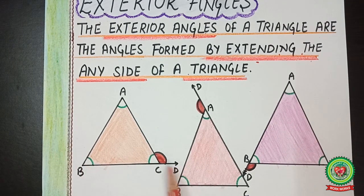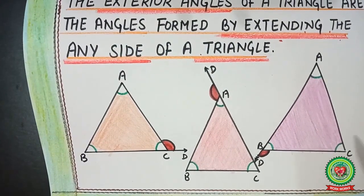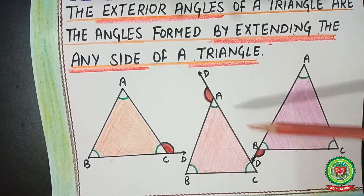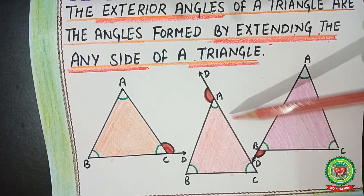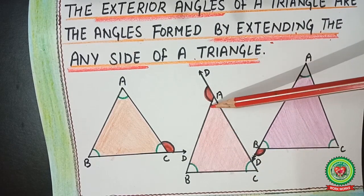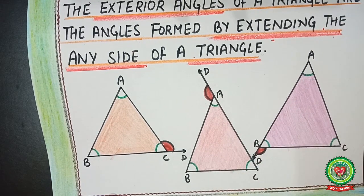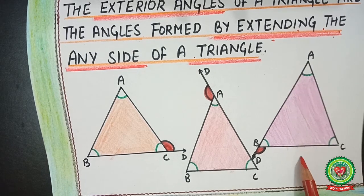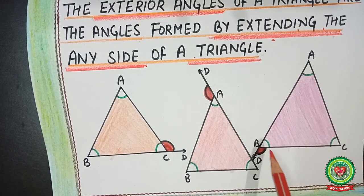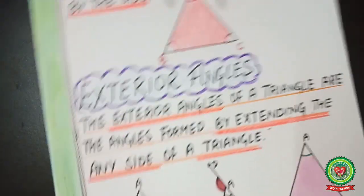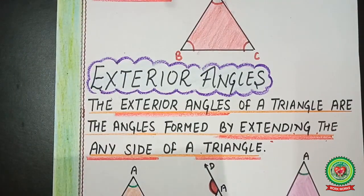Here you can see three figures in which I have extended the sides. In the first figure, triangle ABC has side BC extended to a point, and the red color represents the exterior angle, because exterior angles are always formed by extending a side of the triangle. In the second figure, side AC is extended to point D, forming another exterior angle. In the third figure, side AB is extended to point D, again forming an exterior angle.